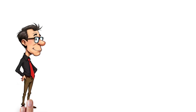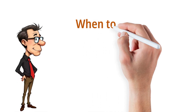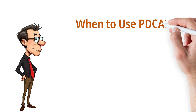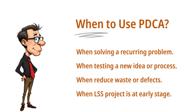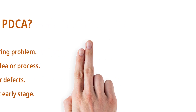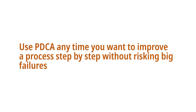When should you use PDCA? You should use PDCA when you're solving a recurring problem, you're testing a new idea or process, you want to reduce waste or defects, or you're in the early stages of a Lean Six Sigma project and need structured experimentation. In short, use PDCA anytime you want to improve a process step by step without risking big failures.